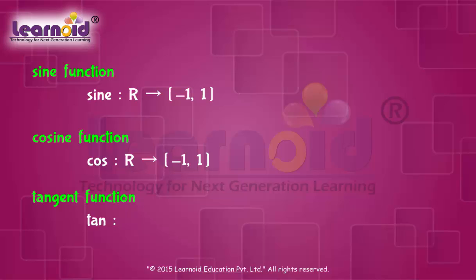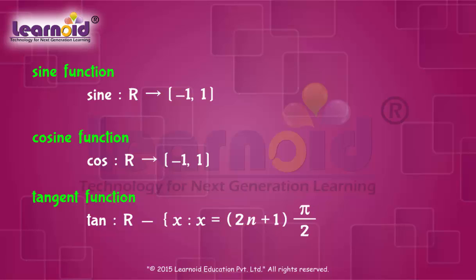Tangent function for all real values of x, except x is equal to (2n+1) pi by 2, for which it is undefined, to R.